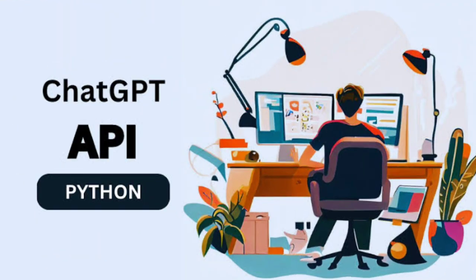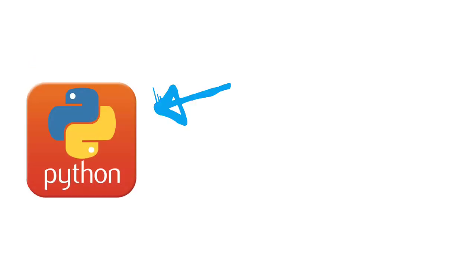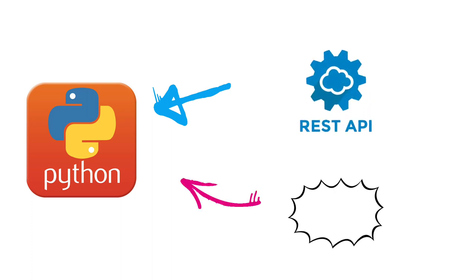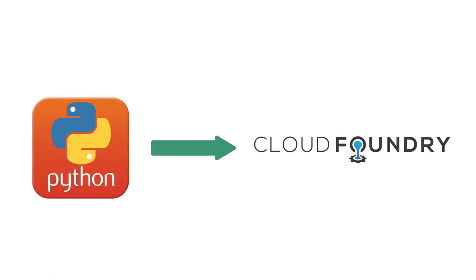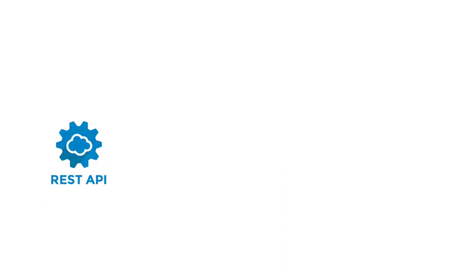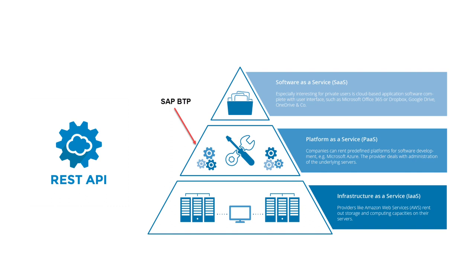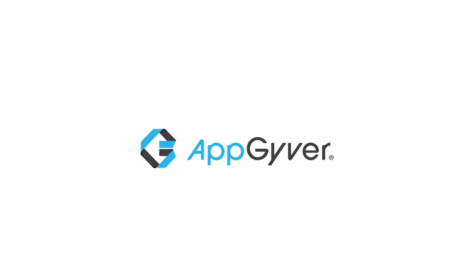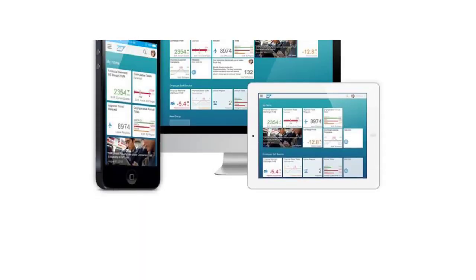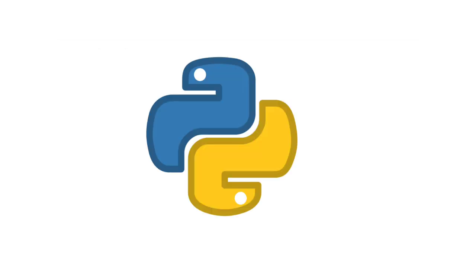To build the API, you have to use a Python script-based application where you'll be consuming the API key along with which model you want to use for ChatGPT. Once the application is ready, it can be deployed into SAP Cloud Foundry BTP subaccount, and that API can be used in any of the SAP BTP services like SAP Process Automation, SAP Chatbot, SAP BuildApps like AppGyver, or any Fiori application as per your use cases.